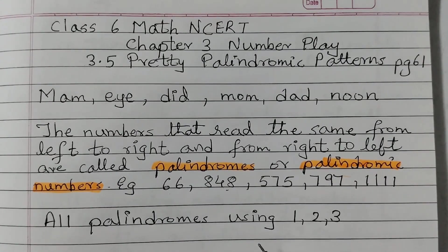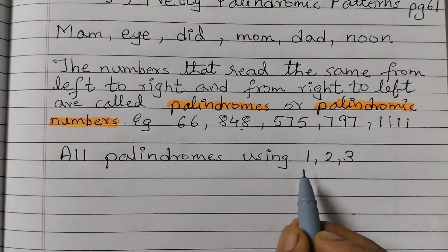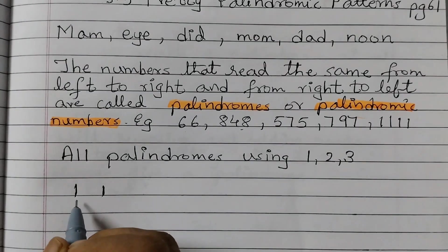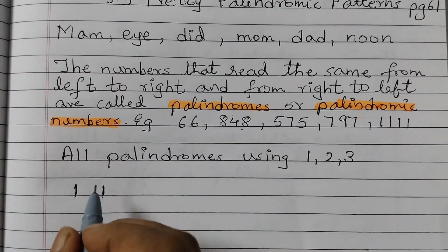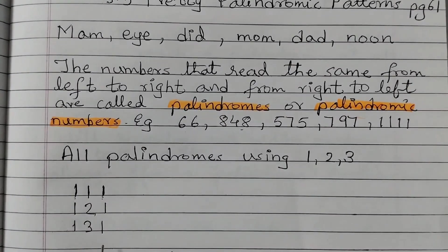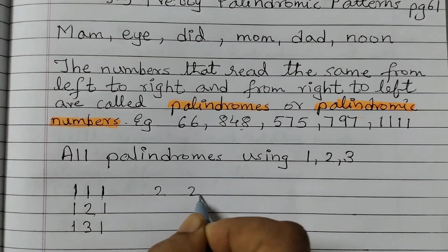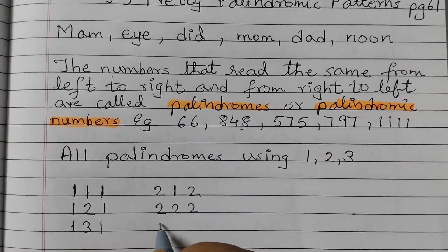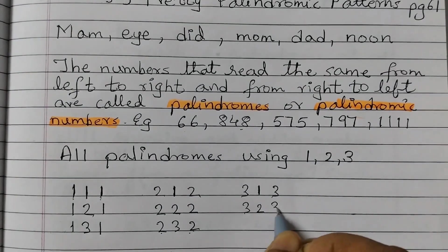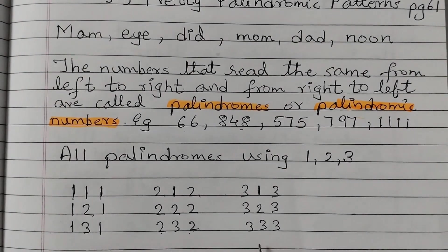Now we are going to make all palindromes using the three digits 1, 2, and 3. We need to make three-digit numbers and see how many palindromes we can form. Starting with digit 1: 111, 121, 131. With digit 2: 212, 222, 232. With digit 3: 313, 323, 333. These are the nine three-digit palindromes we can form using digits 1, 2, and 3.